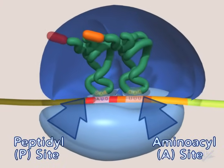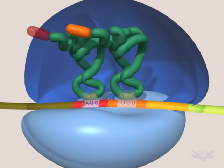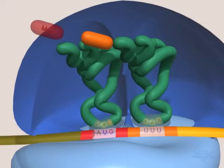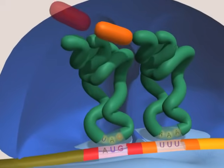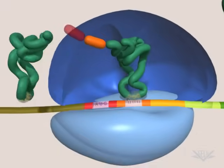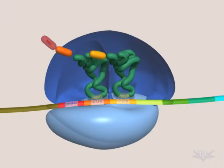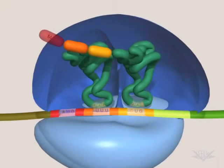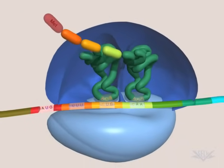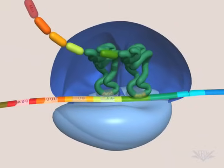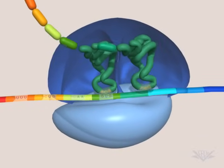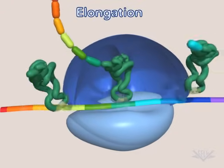The second tRNA enters the A-site and is complementary to the second mRNA codon. The methionine is then transferred to the A-site amino acid. The first tRNA exits, the ribosome moves along the mRNA, and the next tRNA enters. These are the basic steps of elongation.